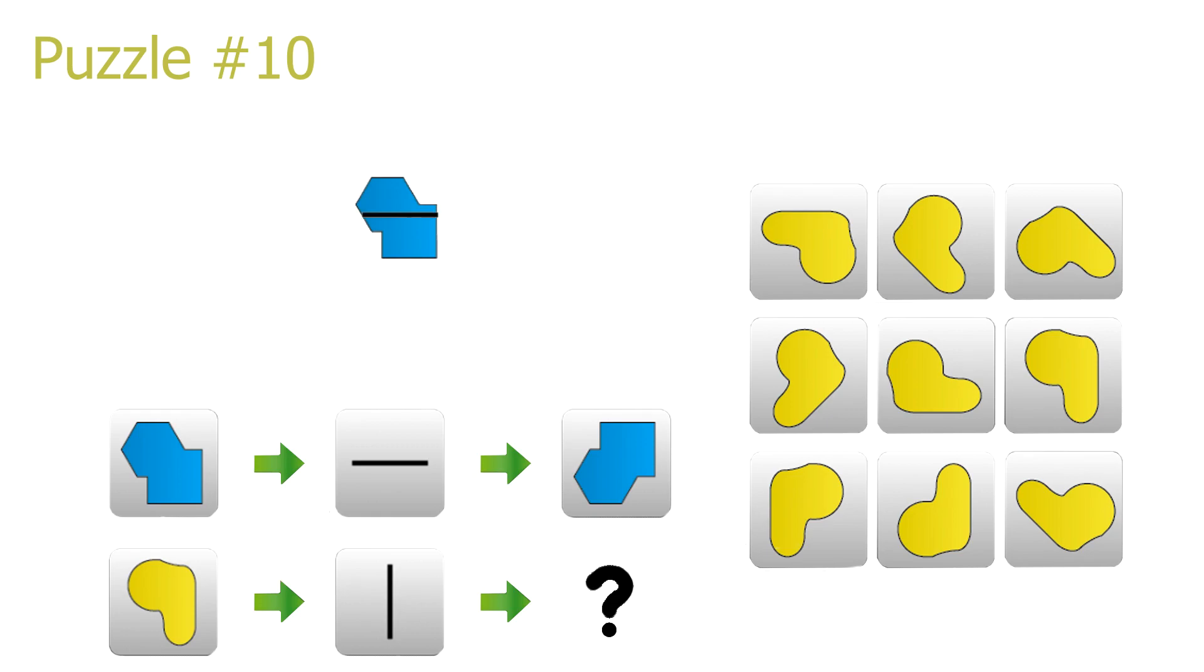And now imagine that we rotate this shape in three dimensions around this line. Rotating a two-dimensional shape by 180 degrees around the line of mirroring is always equivalent to mirroring it across the line.